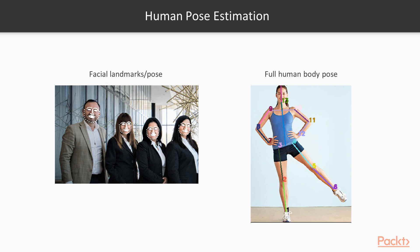Detecting where feet are relative to knees, and knees relative to elbows and so forth, is actually a much more challenging problem than facial detection, because we're very flexible. Even if you can't do the splits, you can still assume a wide variety of poses — we can move our arms, hands, and feet around. We can be standing in a wide variety of positions. So detecting body parts and figuring out how they all come together is a very challenging problem, which until recently was not feasible.